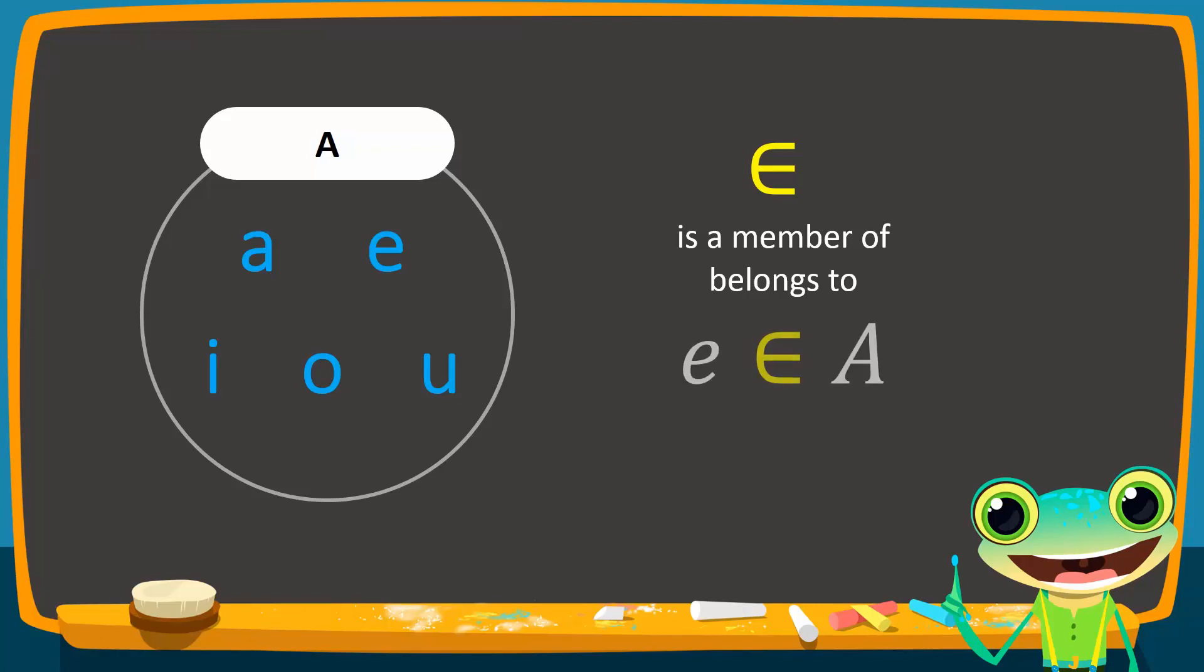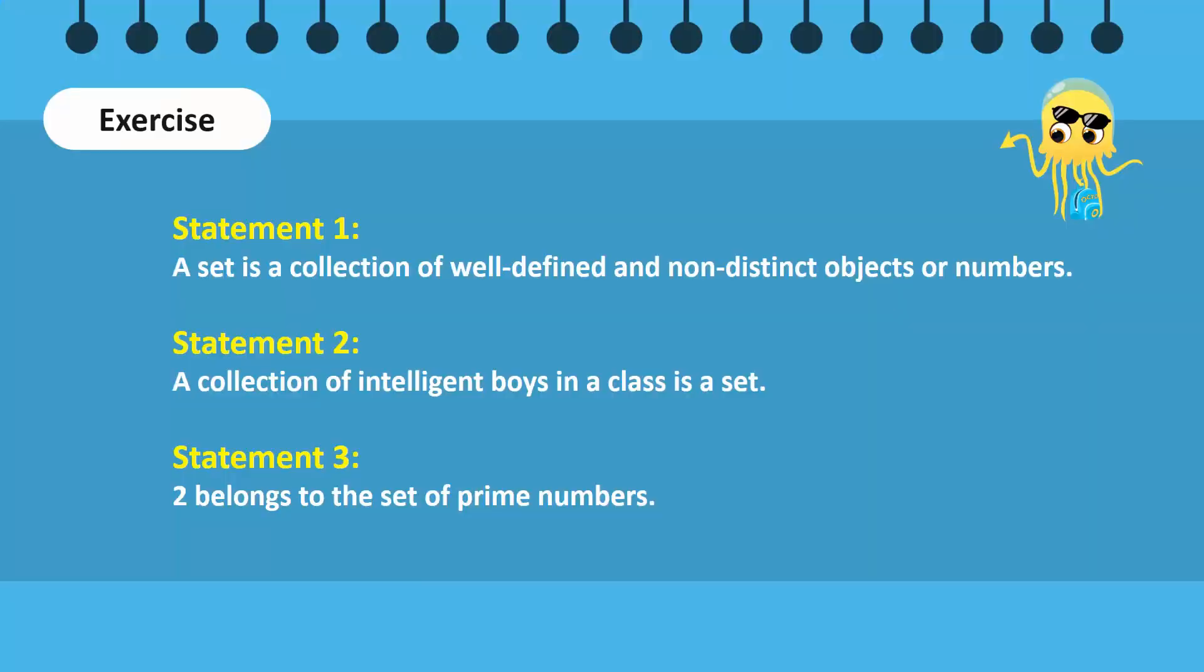If an element does not belong to a set, we simply use the same symbol but cross it out. For instance, we say that element f does not belong to set A. Let us do a quick exercise. Study these statements: which are correct and which are incorrect? Take a minute to think and discuss with your friends.